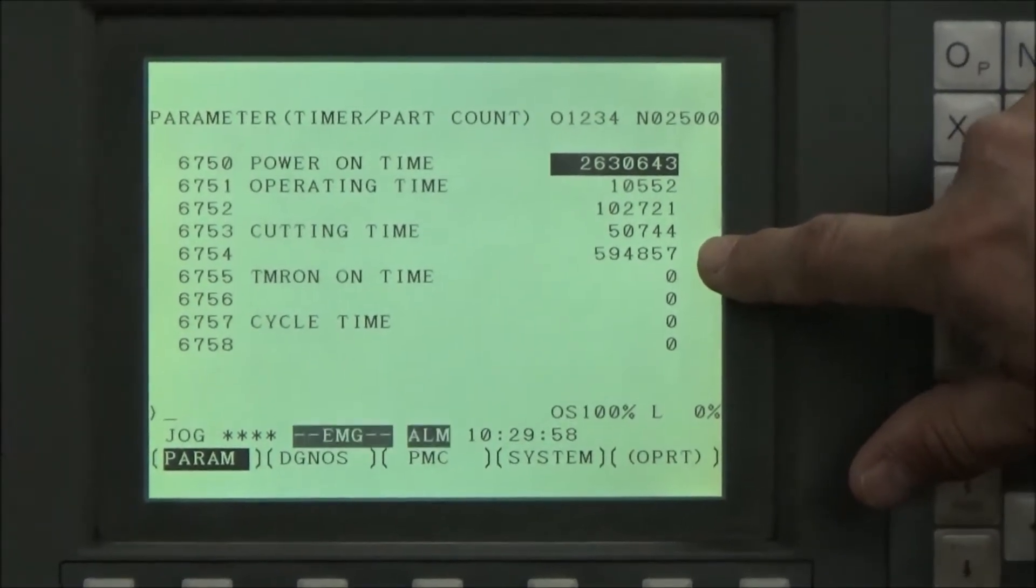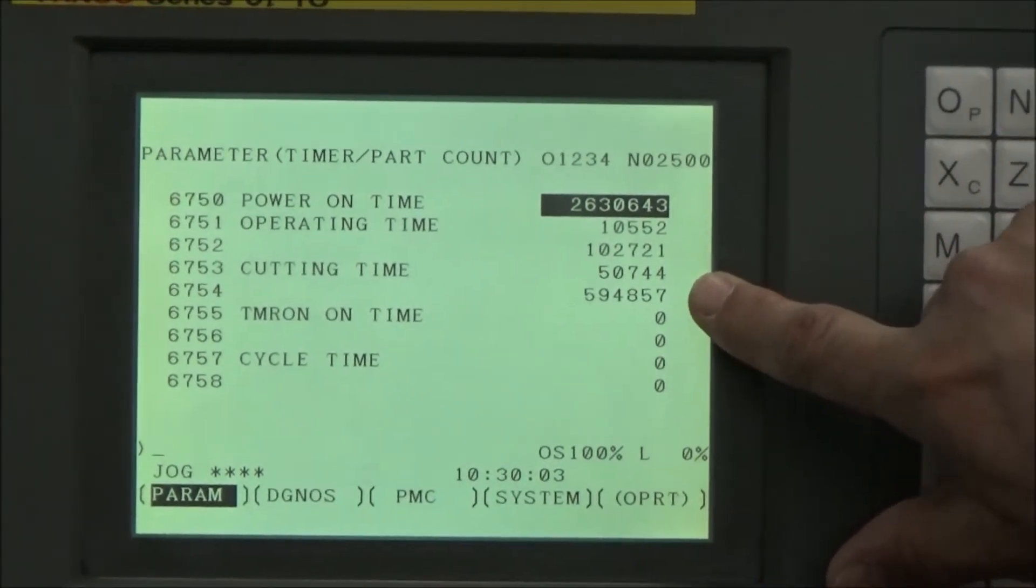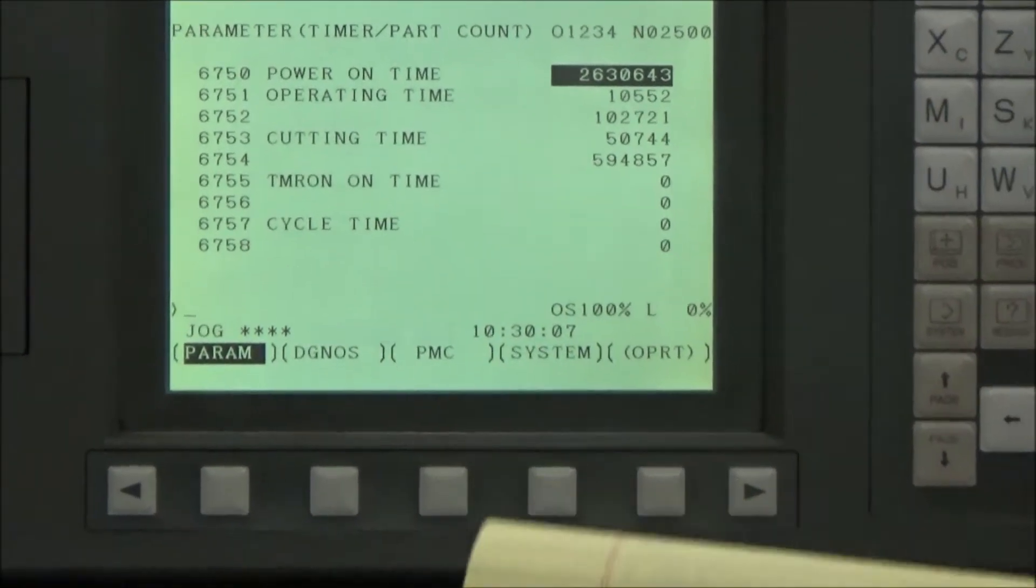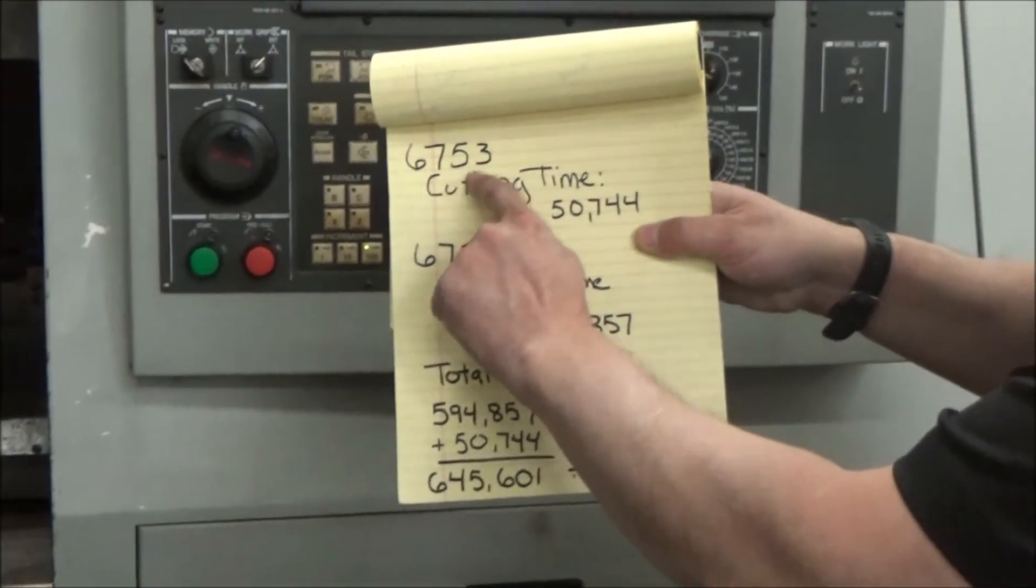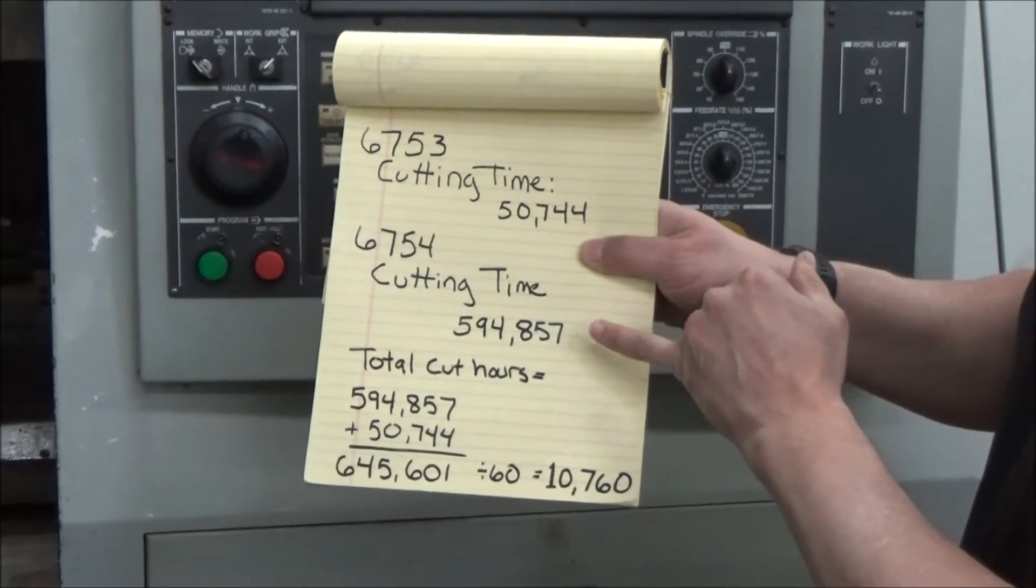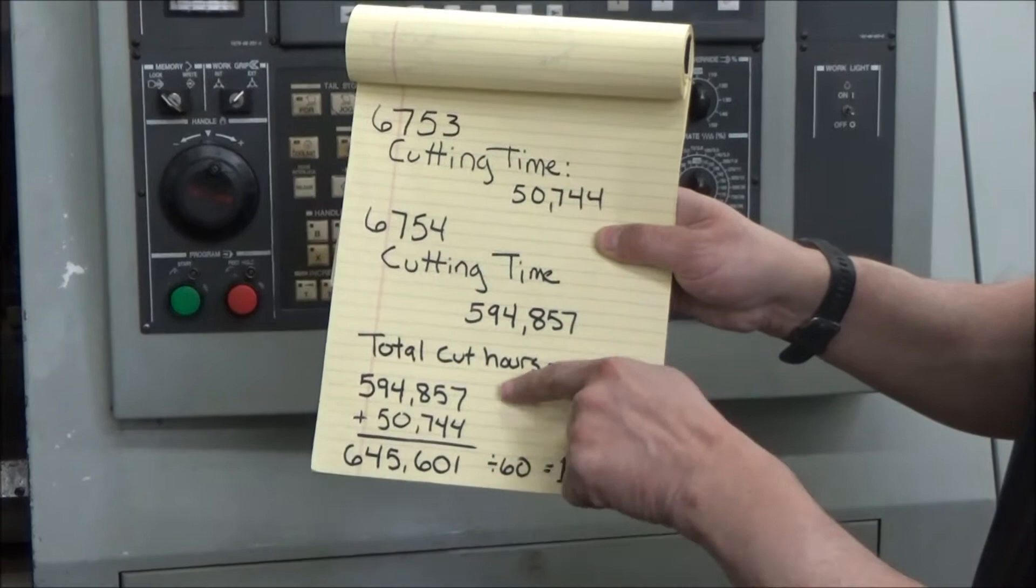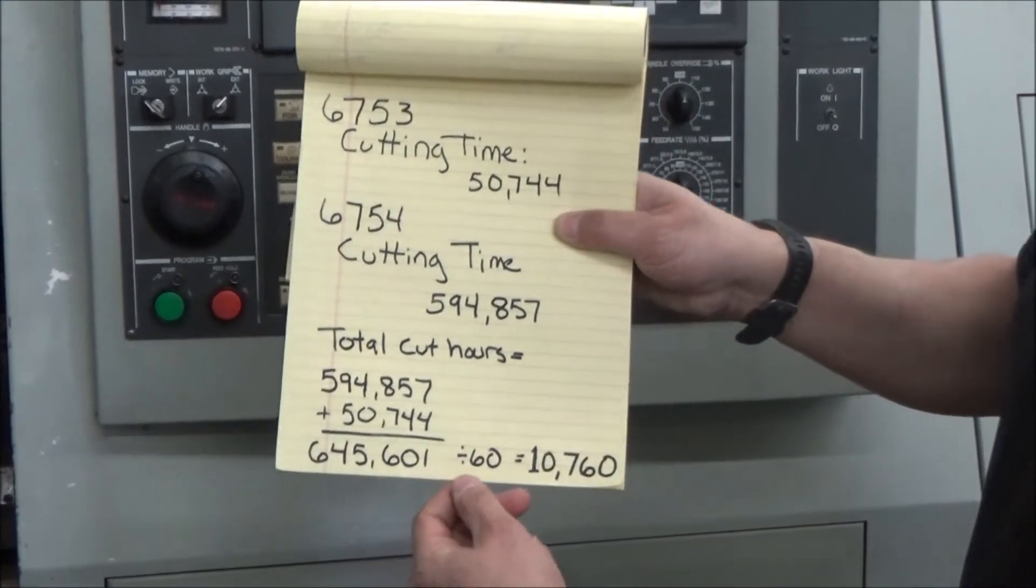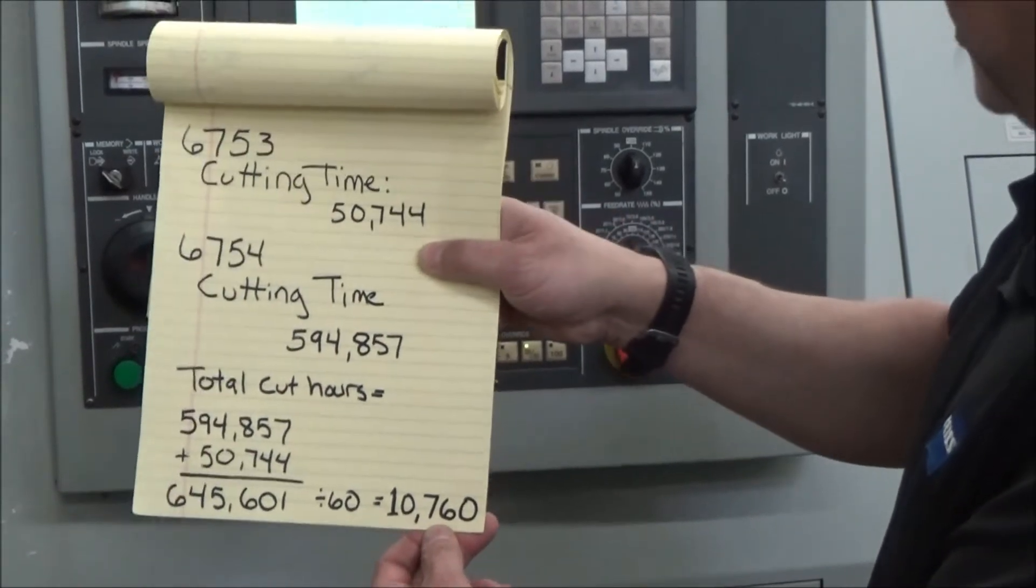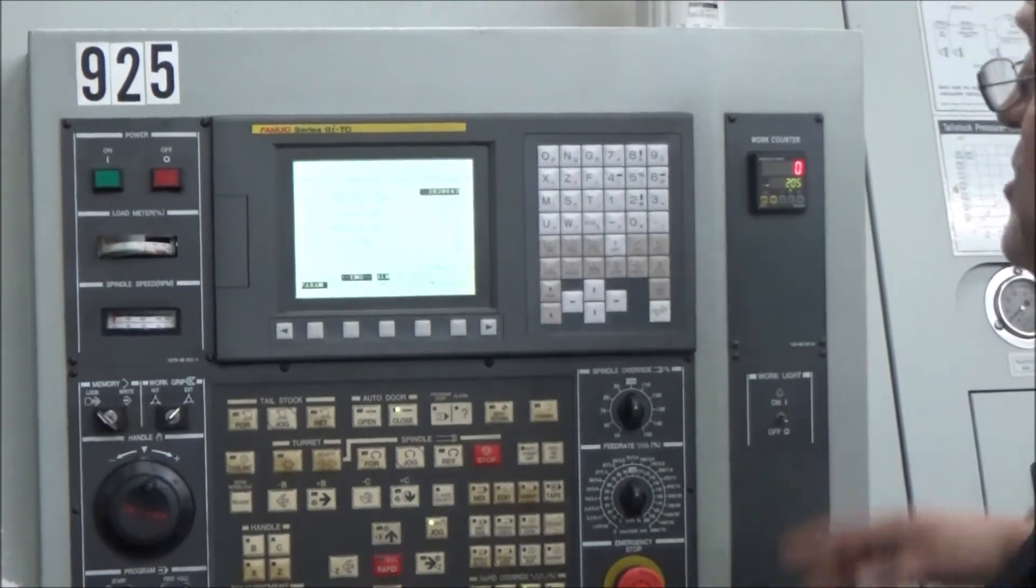So what I want to do is come up with how many cutting hours are on this machine. These two numbers are first of all in minutes, but we got to add them together. So I take, we'll make it simple so you can see it here, the 6753 cutting time, that hours, it's actually minutes, and 6754, I add them together. To get my total cut hours, I add those two numbers together. Then I divide by 60, and I come up with 10,760. So this machine using this tells me it has 10,760 cutting hours.